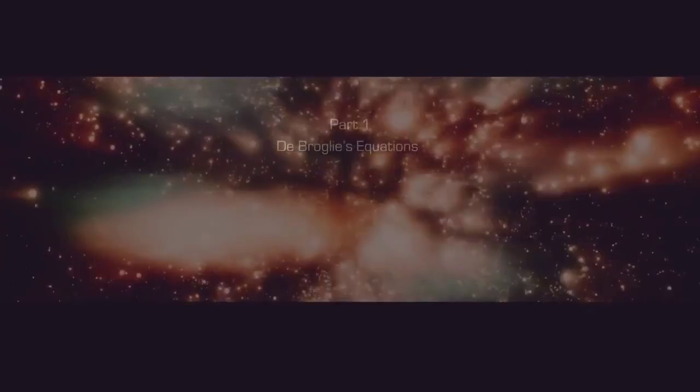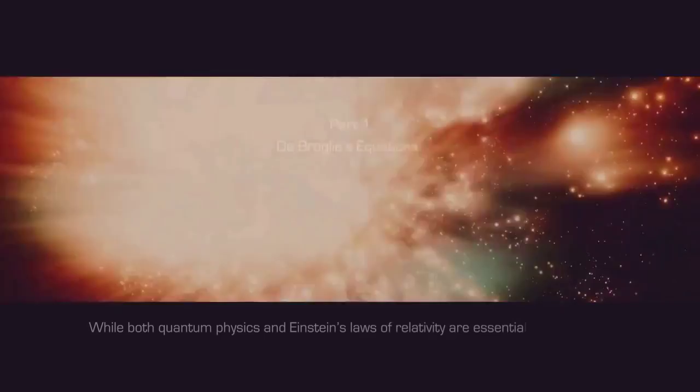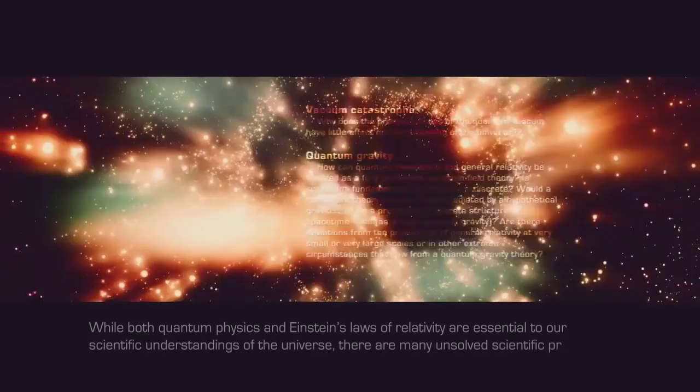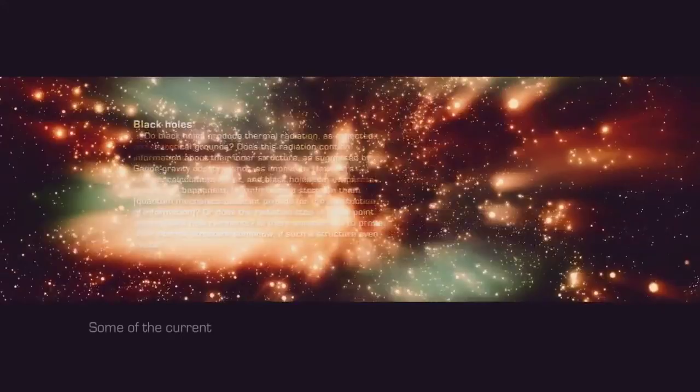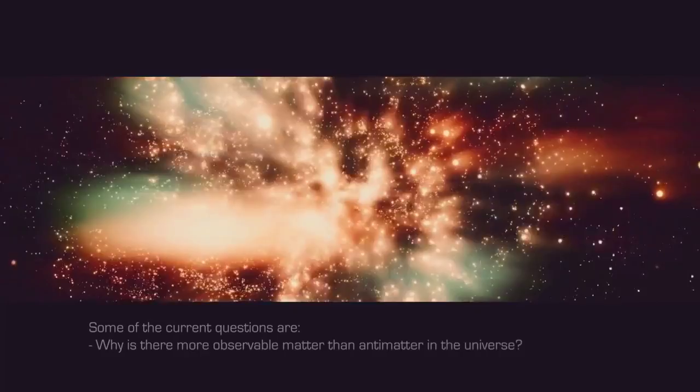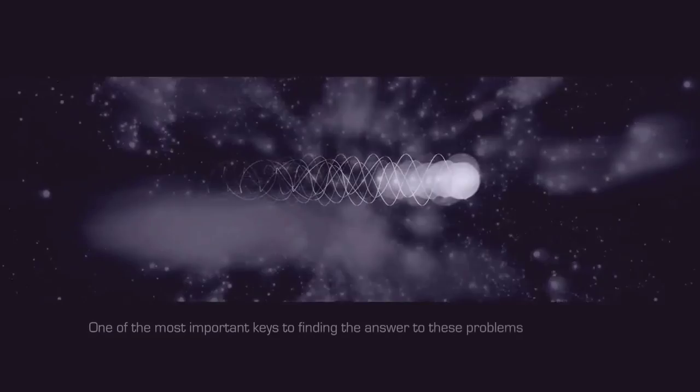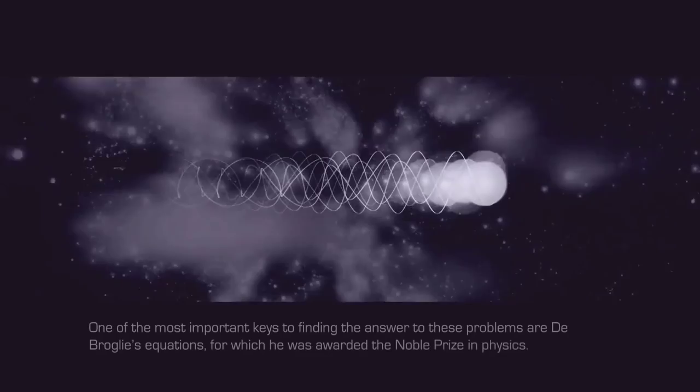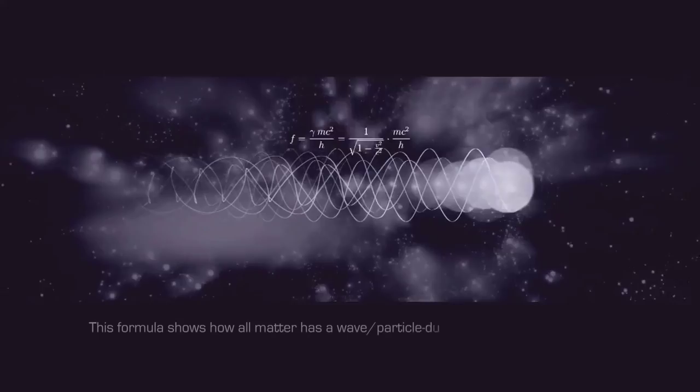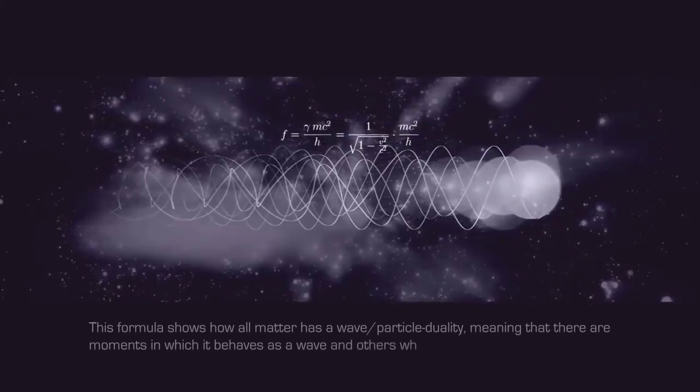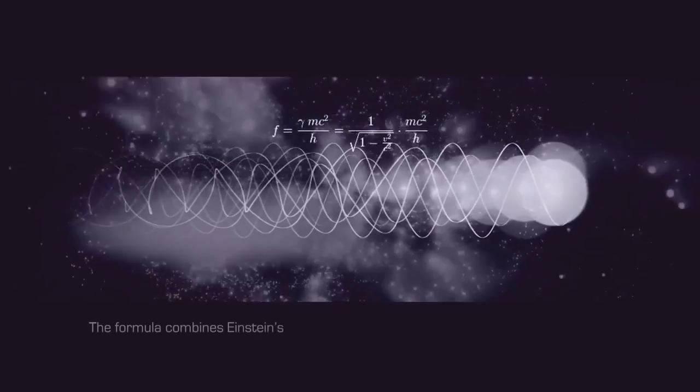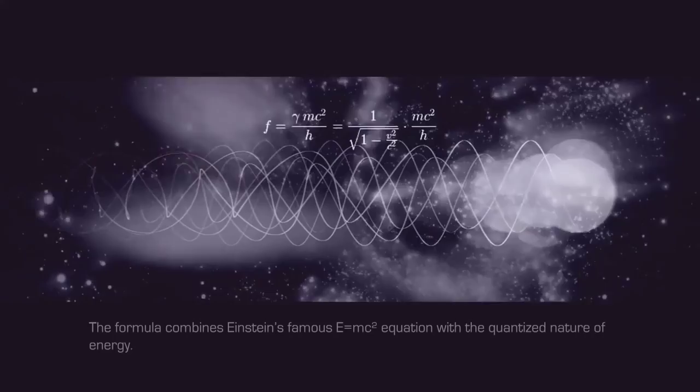While both quantum physics and Einstein's laws of relativity are essential to our scientific understandings of the universe, there are many unsolved scientific problems and thus far no unifying theory. Some of the current questions are why is there more observable matter than antimatter in the universe? What is the nature of the arrow of time? What is the origin of mass? One of the most important keys to finding the answer to these problems are de Broglie's equations, for which he was awarded the Nobel Prize in Physics. This formula shows how all matter has a wave-particle duality, meaning that there are moments in which it behaves as a wave, and others where it behaves as a particle. The formula combines Einstein's famous E=MC² equation with the quantized nature of energy. Experimental evidence includes the interference pattern of C60-Fullery molecules in a double-slit experiment.